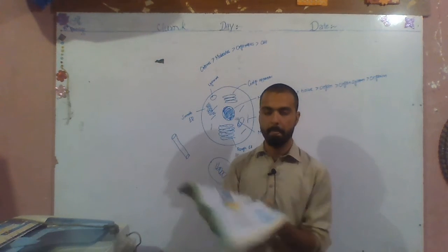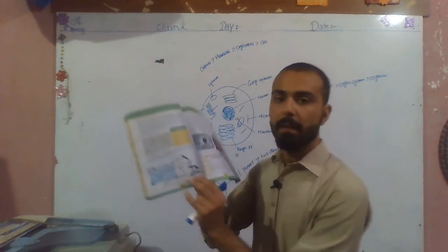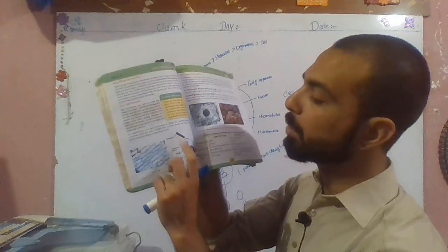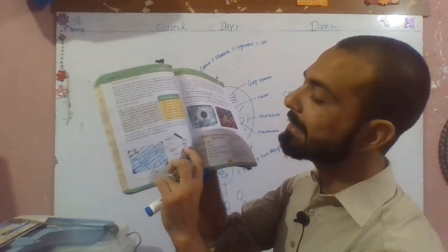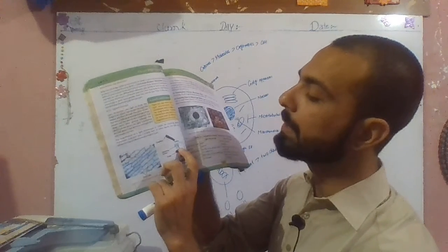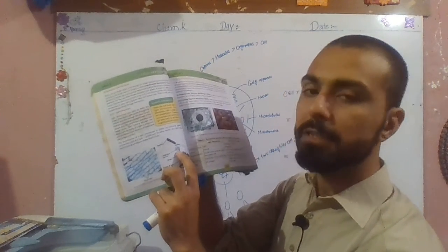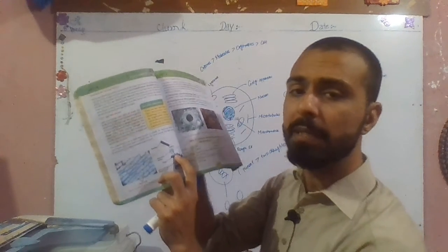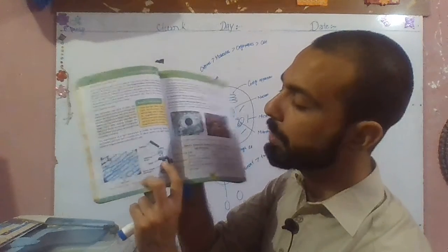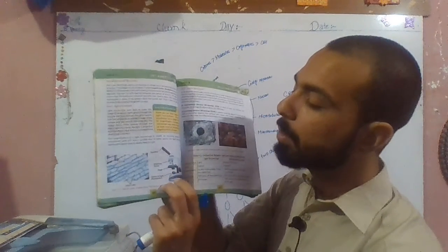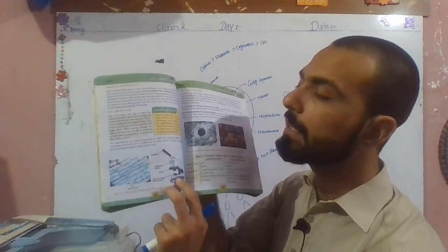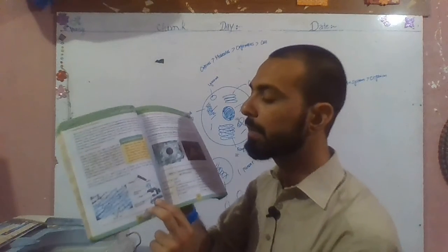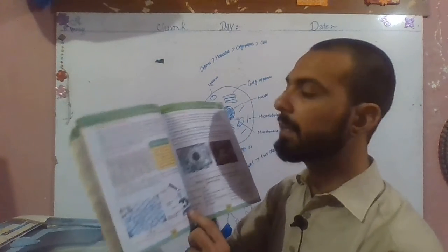In the diagram, one can easily see the parts. The eyepiece is at the top and the objective lenses are 10x, 40x, and 100x. The slide is placed on the stage. The light passes through the slide and the microscope forms the magnified image.